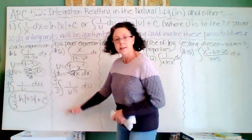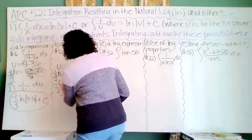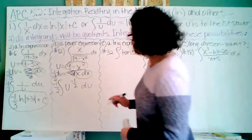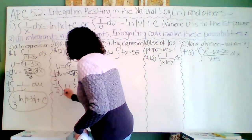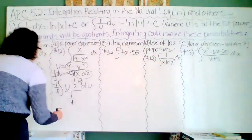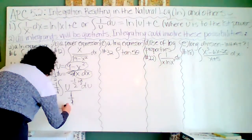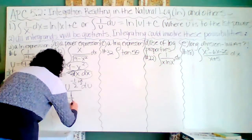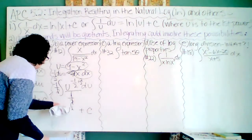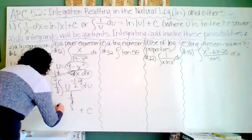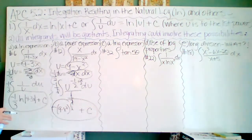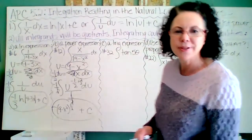Rewriting as u to the negative one-half, I add 1 to the exponent to get u to the one-half, then divide by the new exponent one-half. One-half divided by one-half leaves negative 1, giving negative u to the one-half plus C. Substituting back, the answer is negative square root of (9 minus x squared) plus C — or using a radical sign instead of the one-half exponent.